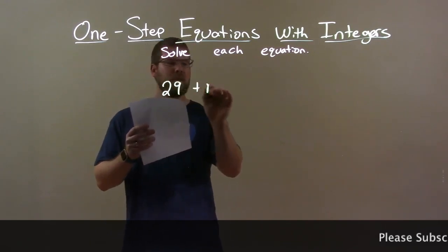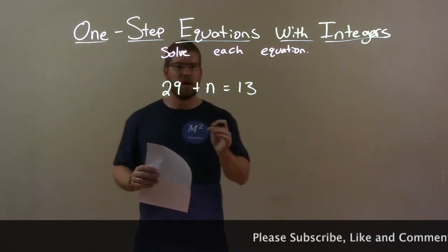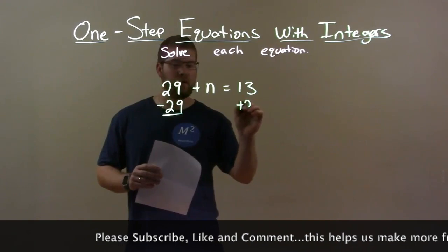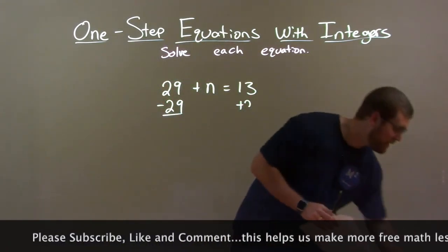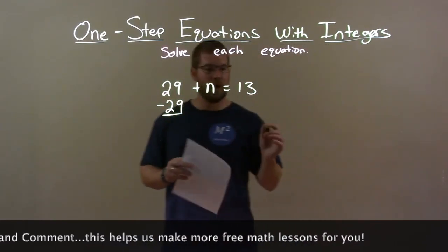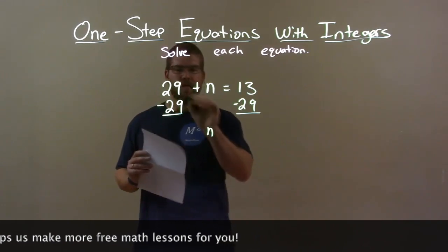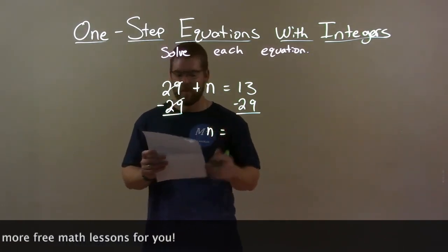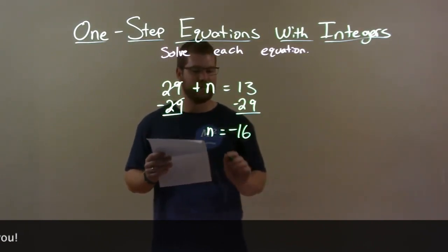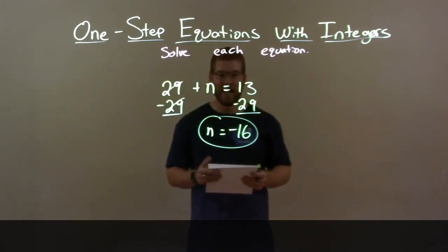29 plus n equals 13. I want to get n by itself. To do so, I have to subtract 29 from both sides. We were given a positive 29 — opposite of that is subtracting 29. So we subtract 29 from both sides. The 29s cancel, leaving n by itself on the left. Now 13 minus 29 is negative 16. So our final answer is n equals negative 16.